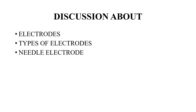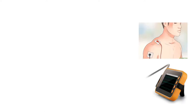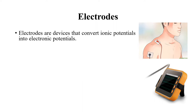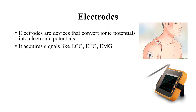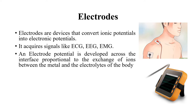Today's discussion is about electrodes and types of electrodes, and we are going to discuss needle electrodes in detail. First, we will see what electrodes are. Electrodes are devices that convert ionic potential into electronic potential. Our body consists of various ionic potentials due to the movement of ions, and we need to convert this ionic potential into electronic potential with the help of electrodes. We measure and acquire signals like ECG (electrocardiography), which is used to measure heart activity, EEG (electroencephalography), which is used to measure the potential of the brain.